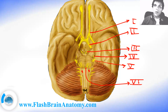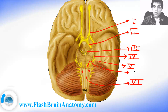Cranial nerve number seven is this nerve over here and it innervates the posterior belly of the digastric muscle and also innervates the stapedius muscle. This is the facial nerve.